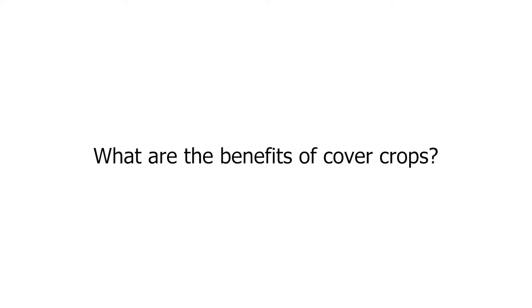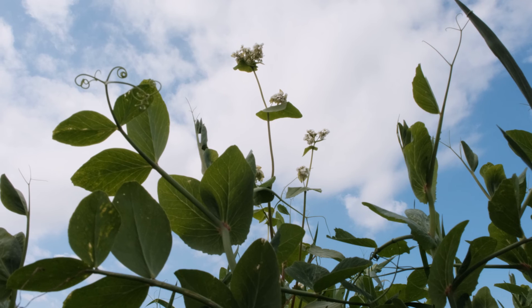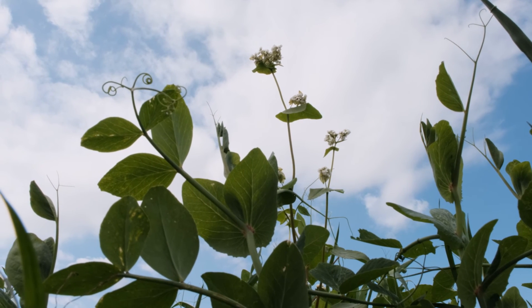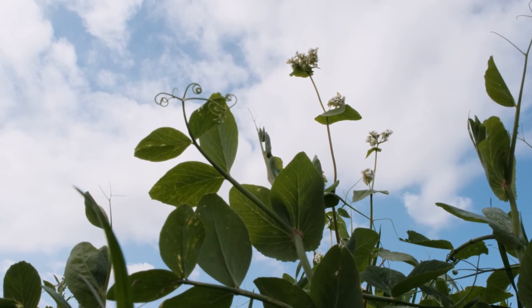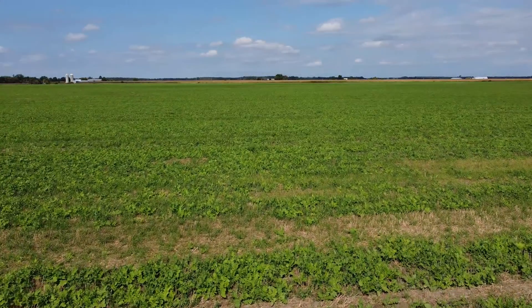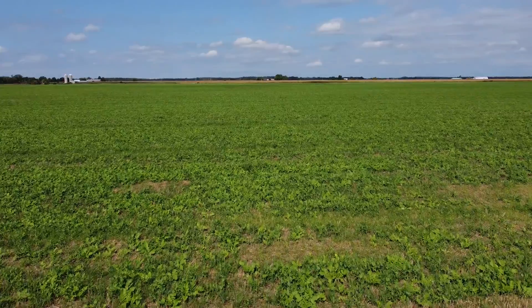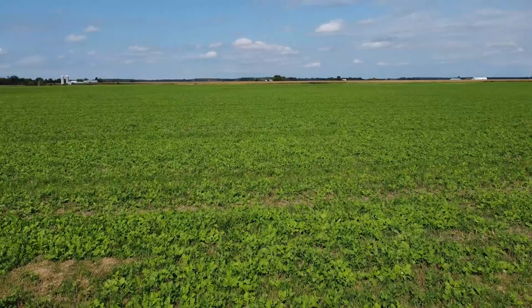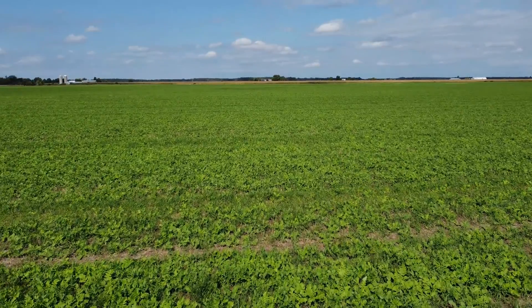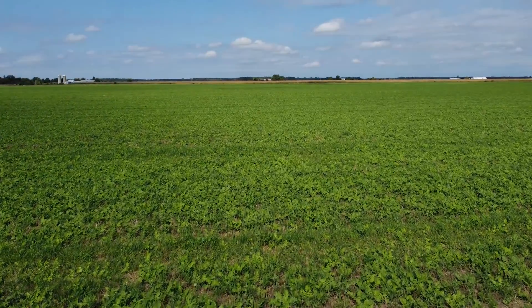There are a lot of different uses for cover crops. The first one that people think of is soil improvement — by adding organic matter. For example, if you plant a cereal and turn it over, it will increase your organic matter. You can also protect the soil from erosion: wind erosion and water erosion. And there is also soil structure improvement.